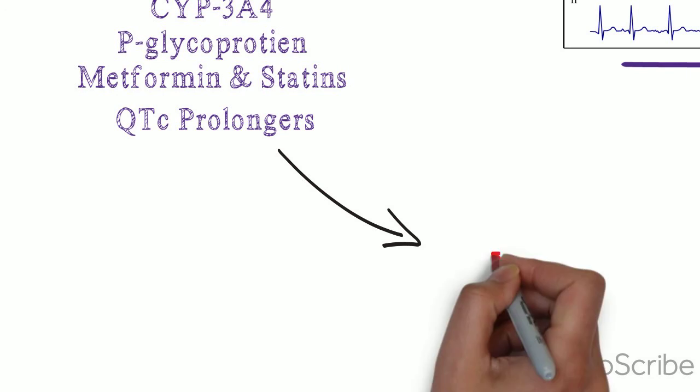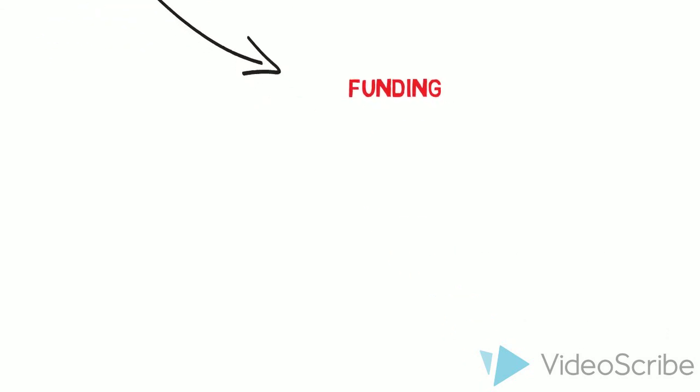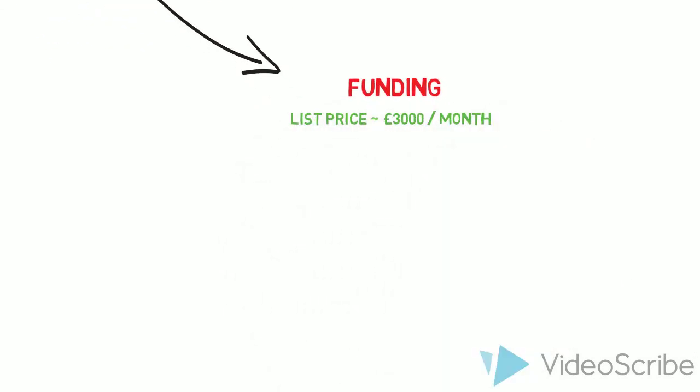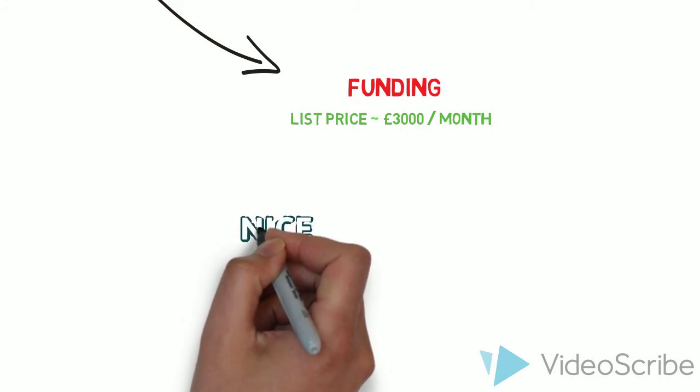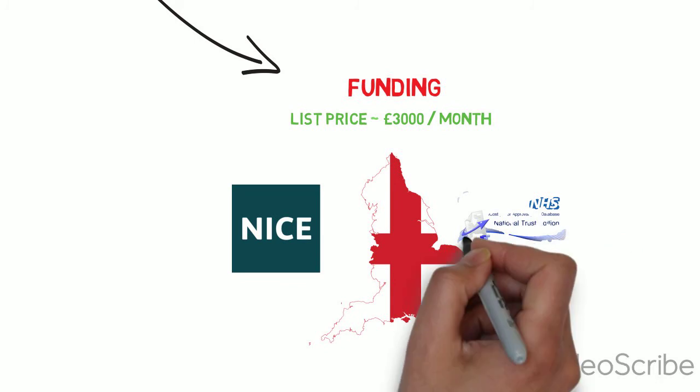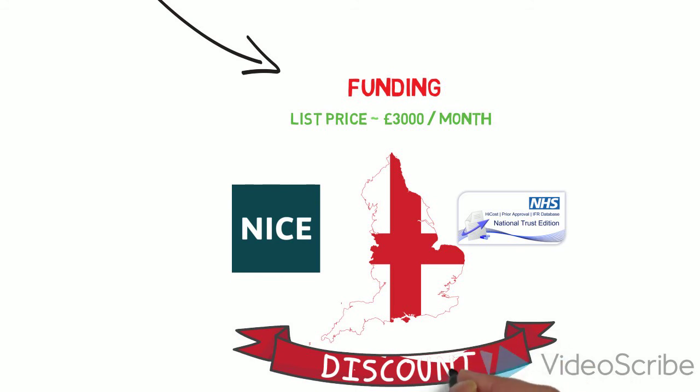Both drugs have list prices of just under £3,000 per month and so funding within the NHS was always going to present a challenge. The National Institute for Clinical Excellence has just reviewed both drugs and from November 2017 both drugs will become available in England, initially via the Cancer Drugs Fund and then through NHS England. Scotland will review palbocyclib in December and ribocyclib in 2018. Wales will also review their use shortly.